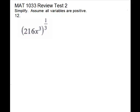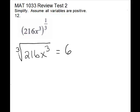Remember that the denominator is the index, so this will be a cube root of 216x cubed. If you check it on your calculator, 216 is actually a perfect cube. So you can take the cube root, which is 6, and it will come out from under the radical. The cube root of x cubed will be just x, so everything will actually come out from the radical.